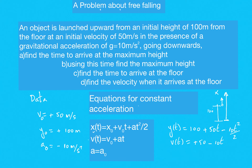In any problem with constant acceleration, my advice is to write the equations of motion first. Once you write the equations of motion, all the information is there. The answer to any question the problem can ask is contained in those equations. We wrote the two equations of motion for this case: initial velocity positive, initial height 100 meters.